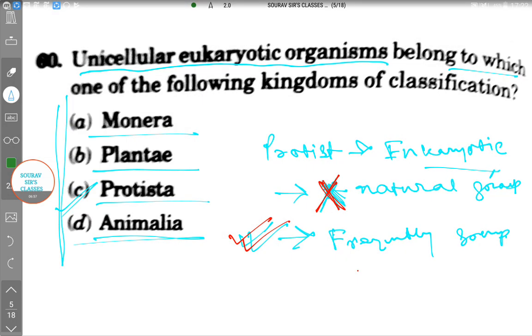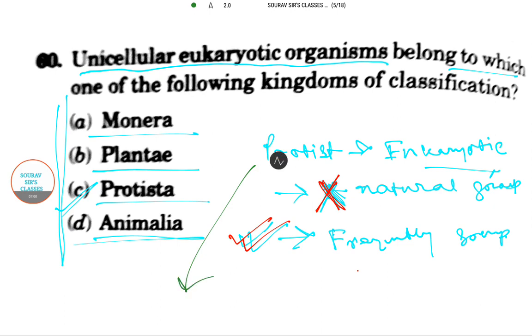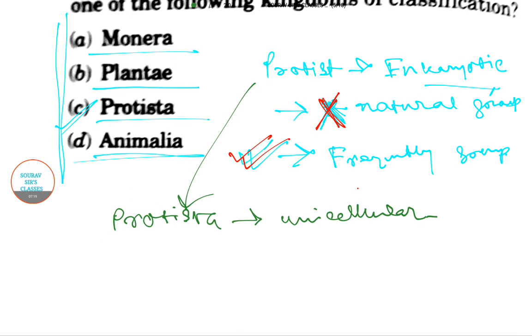Protists are one of the kingdoms called Protista. They are unicellular and form no tissues. As they form no tissues, they obtain energy by consuming other organisms.